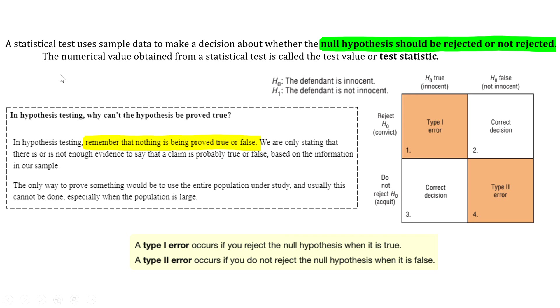The first outcome is that the defendant is innocent, and the jury decides to convict them. Obviously, that would be an incorrect decision, and that can happen. That's what we call a Type 1 error. Down at the bottom, you can see that a Type 1 error occurs if you reject the null hypothesis when it is true.